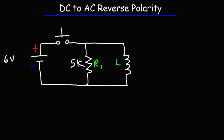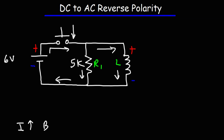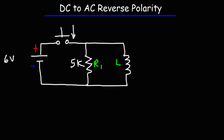We can also do the same thing with an inductor. Here's a circuit that's going to show how we can do that. Once we close the switch, current from the battery is going to flow through R1 and some current will flow through the inductor. The polarity across the inductor will be as follows. As the current flowing in the inductor increases, a magnetic field will be created. As the current increases, the strength of the magnetic field increases and it expands. Now what's going to happen when the switch is open?